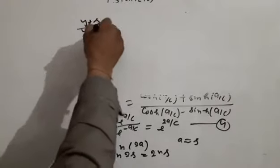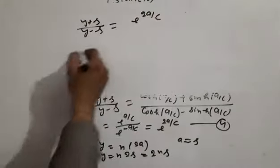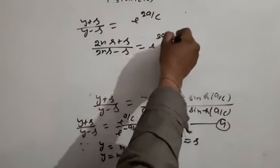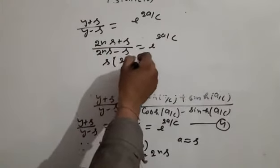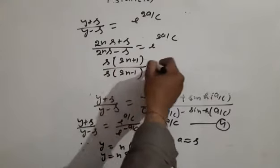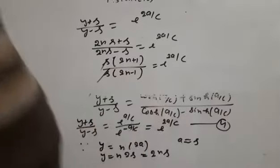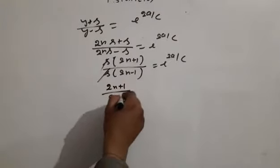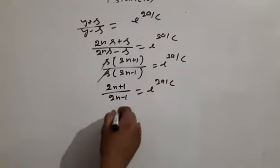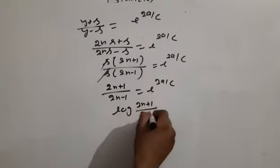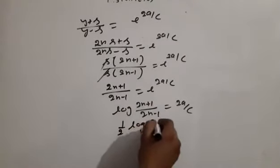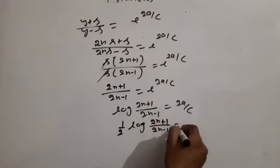Substituting into (y+s)/(y−s) = e^(2a/c): (2ns + s)/(2ns − s) = e^(2a/c). Taking s common: (2n+1)/(2n−1) = e^(2a/c). Taking logarithm: log((2n+1)/(2n−1)) = 2a/c.